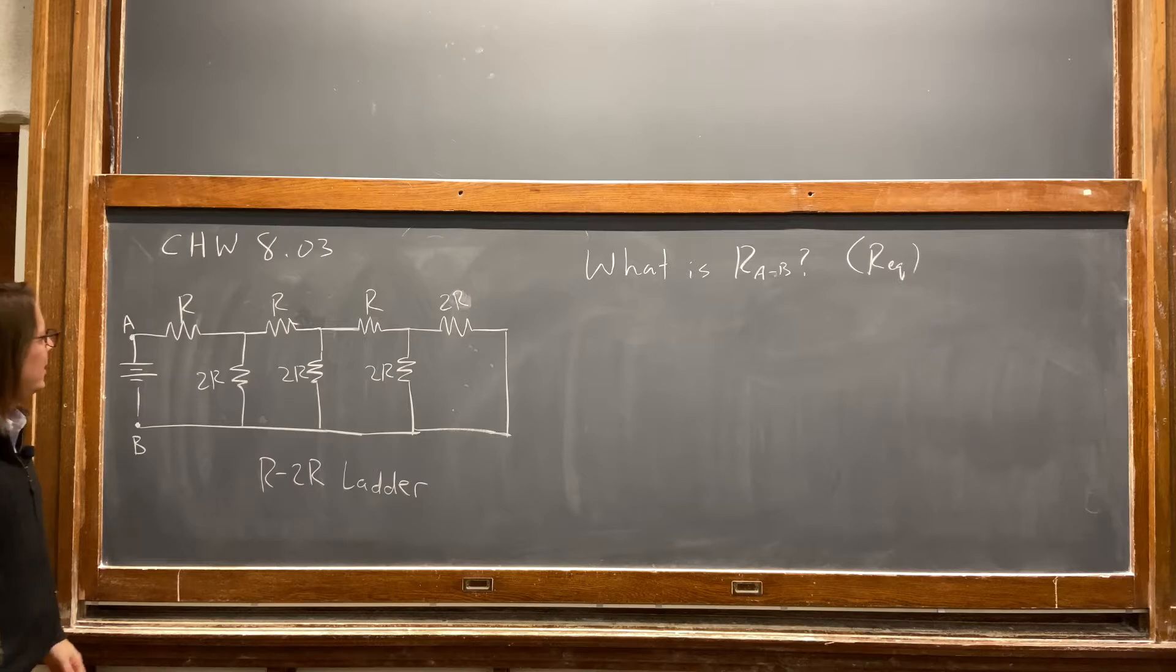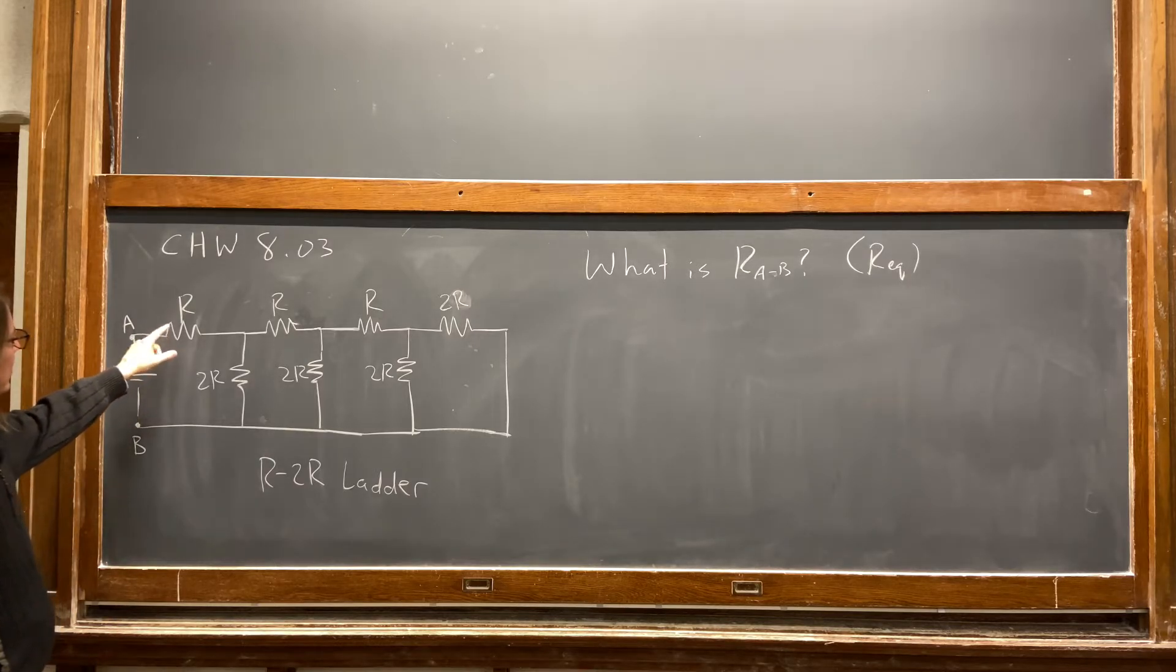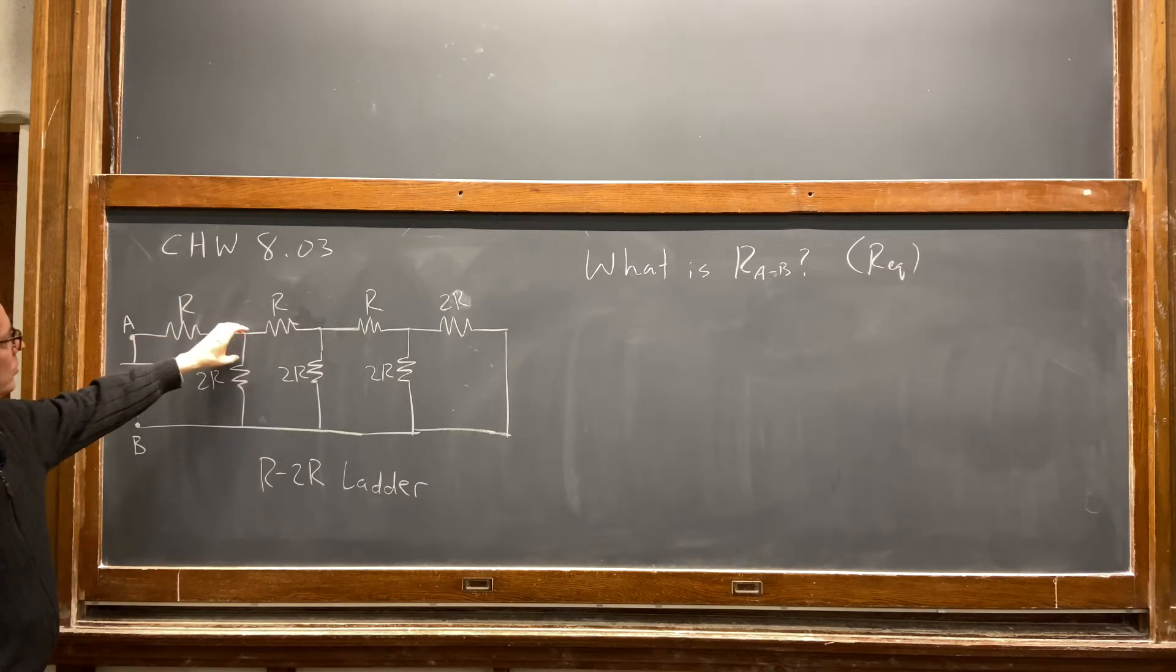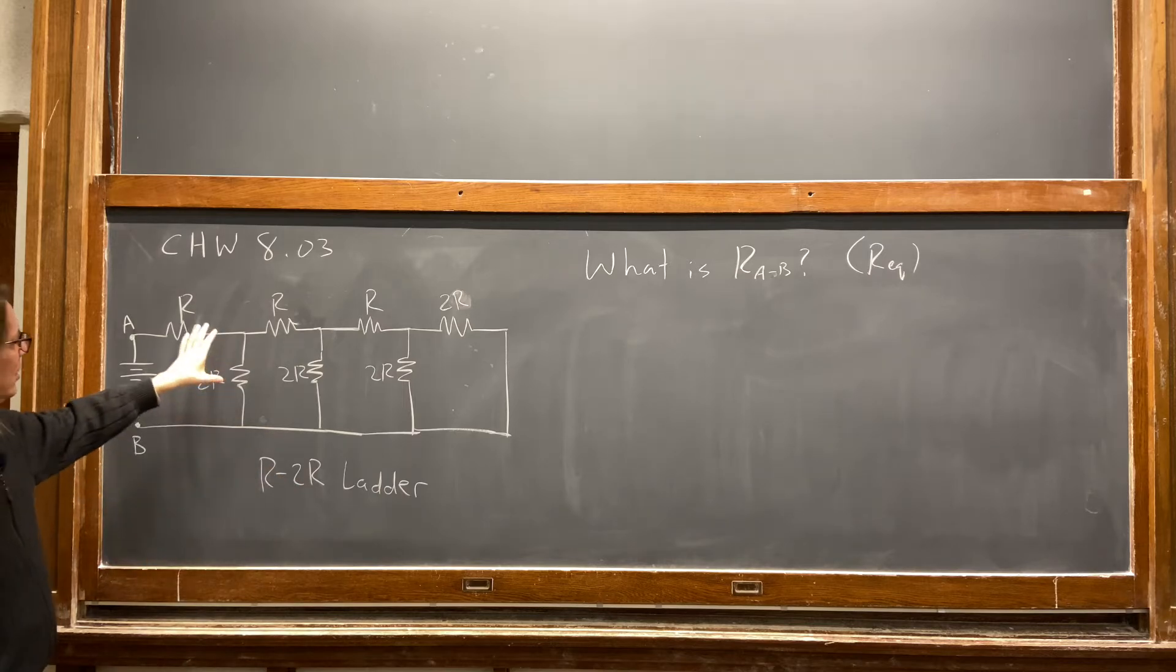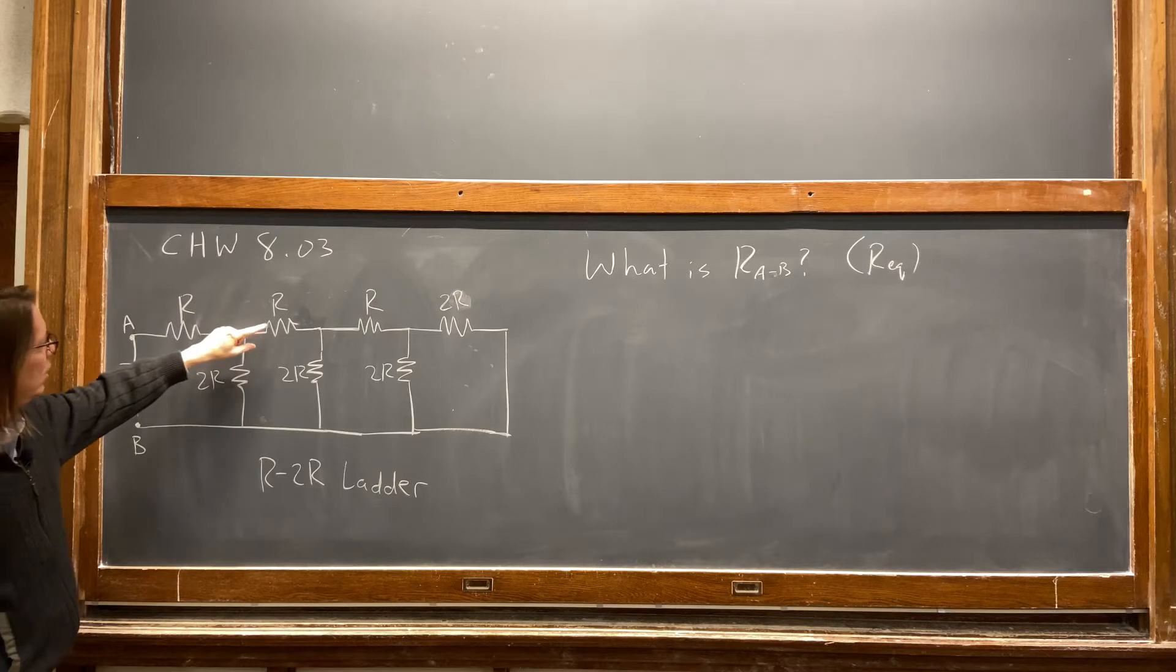All right, so you look at it and you could start to think, okay, I've got current flowing, so here I have R, and then it splits, and this initial R is in series with whatever this turns into. Okay, so it's in series with these two things in parallel, 2R and R, but then that's in parallel.